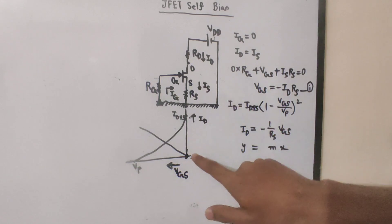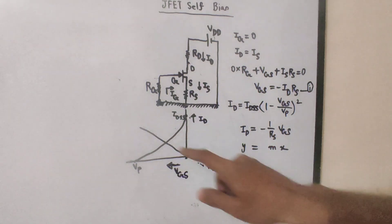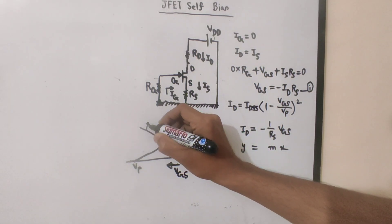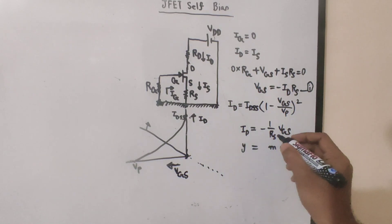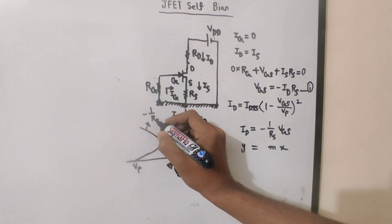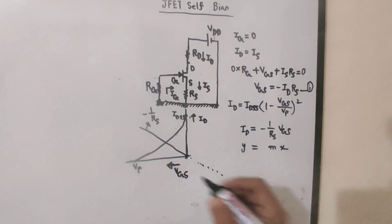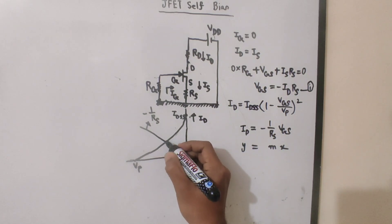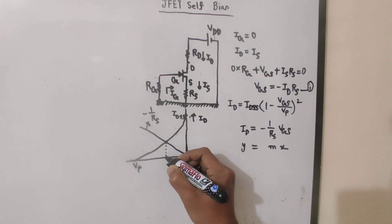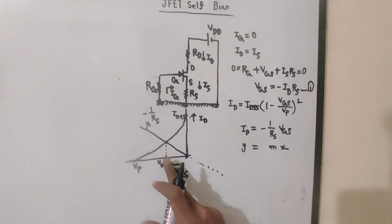We apply the logic of M plus D and M minus D. The self-bias line has a slope of minus 1 over RS. This bias line intersects the transfer curve at the Q-point, which gives us VGS-Q and ID-Q.